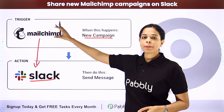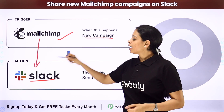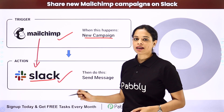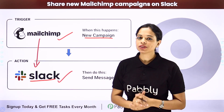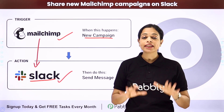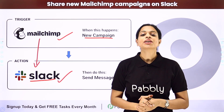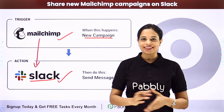Here your trigger application will be MailChimp and your action application will be Slack. Now how can you do this yourself — integrate and automate this entire process? To understand that, let me take you to my screen.